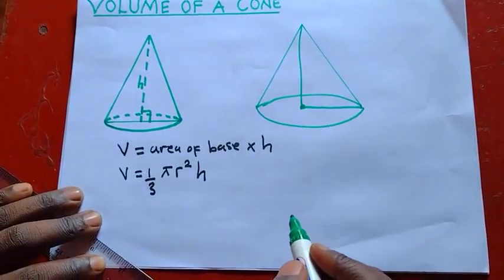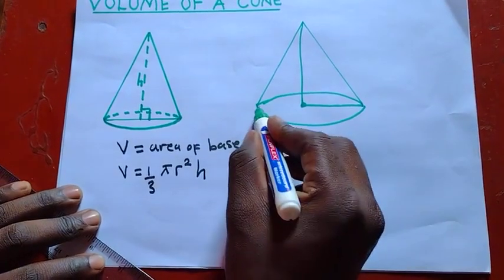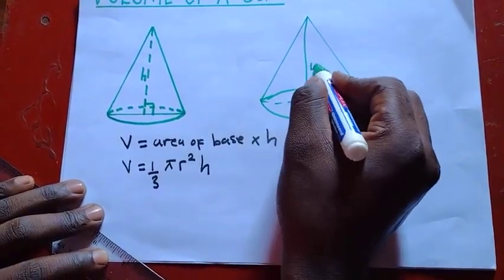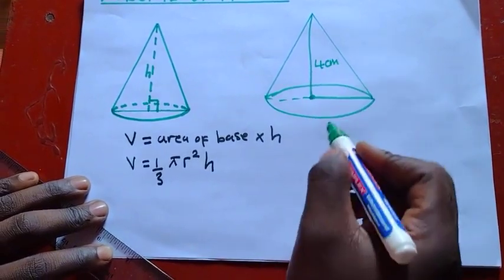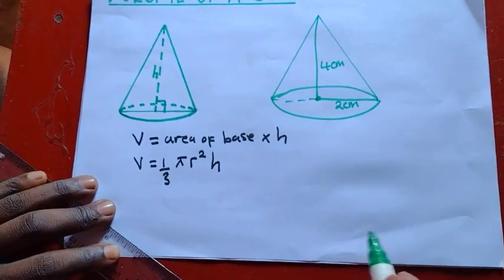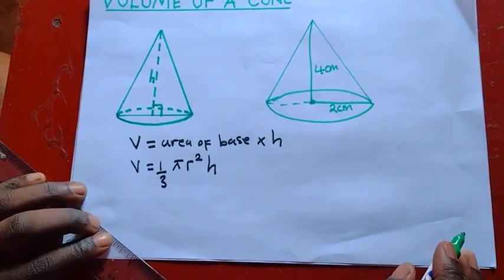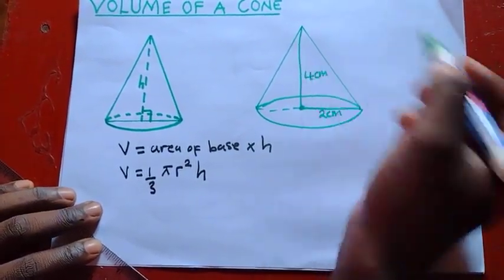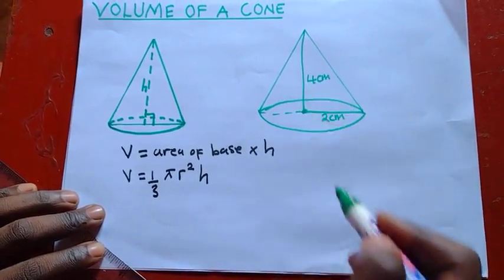Then here we have said you have your height there. Then there is the radius there. So the height we are saying if it's 4 cm and the radius here maybe is 2 cm. Okay? Then they say find the volume of this cone.